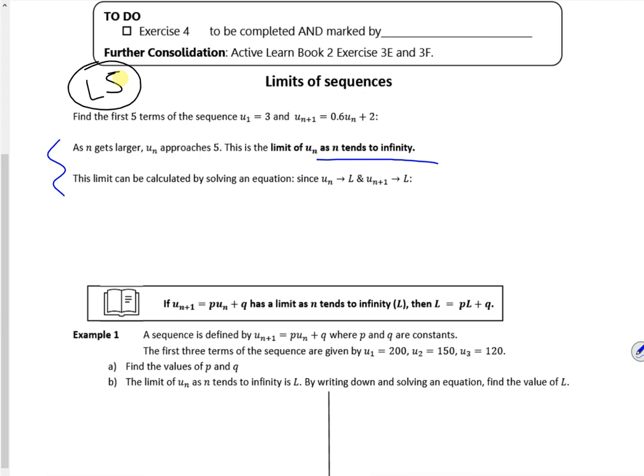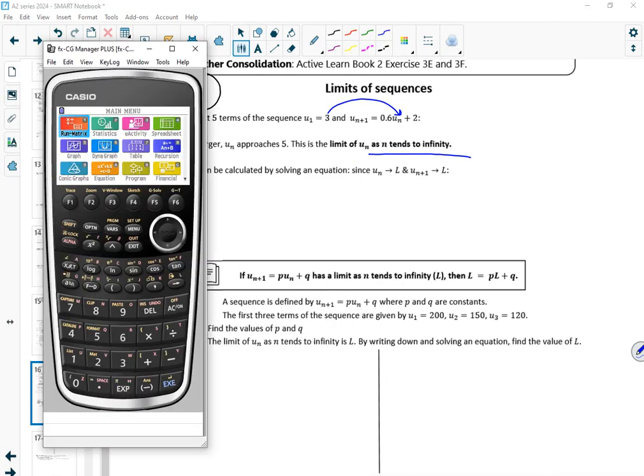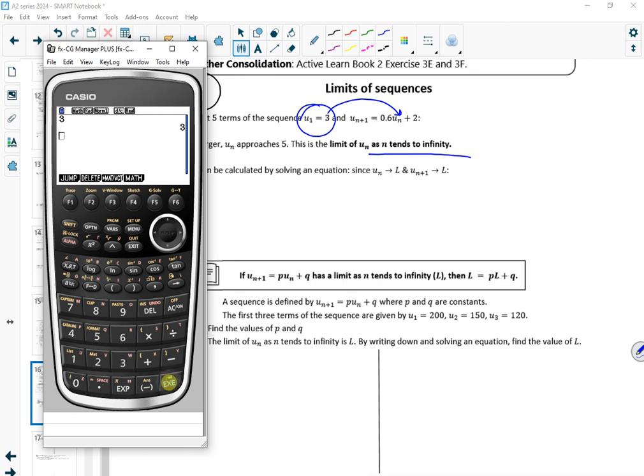Right, so this is what this is trying to tell us here. Now we can actually do it in a calculator. So by putting 3 into here and seeing what you get out. It's recursive, so what you put in gives you what you're going to use next time. So I'm going to put in 3 in my calculator, and then I'm going to do 0.6 times ans in my calculator plus 2. So that gives me 3.0.